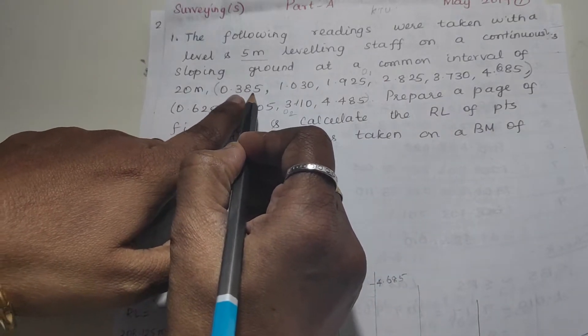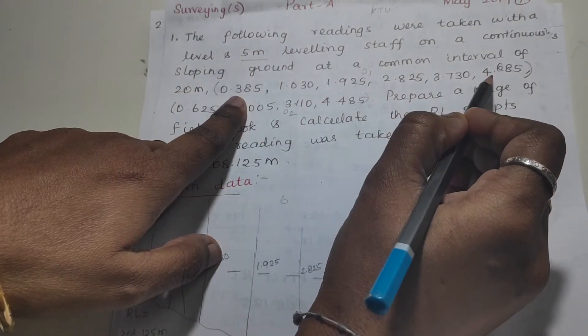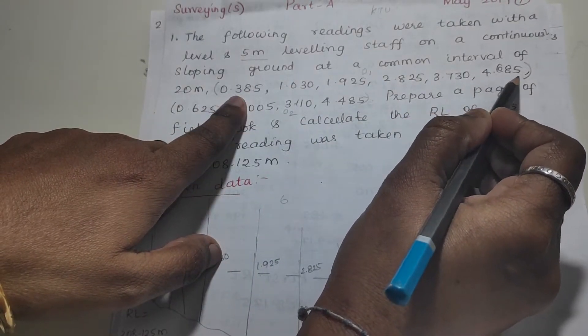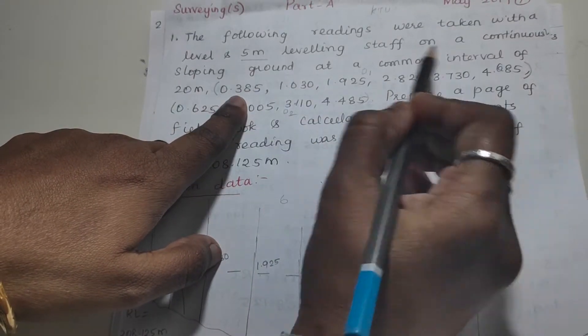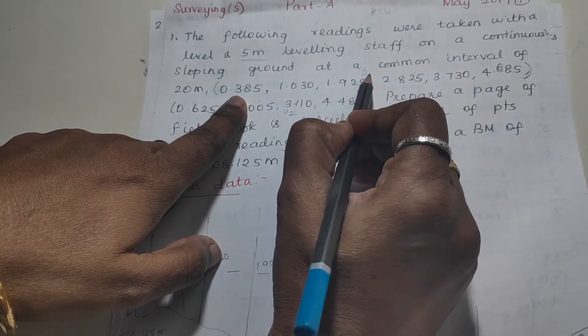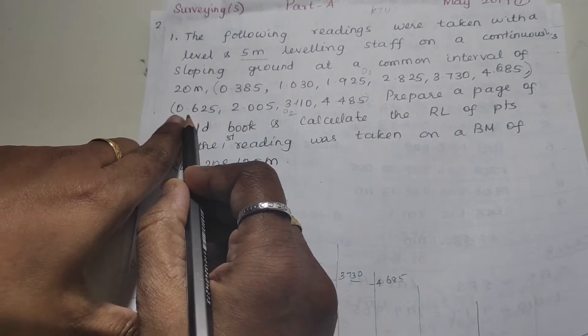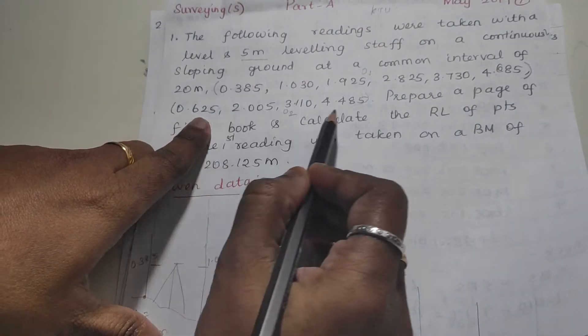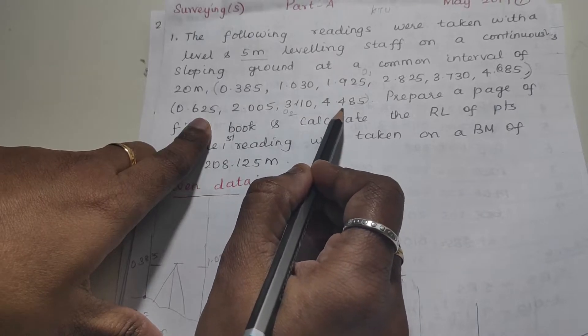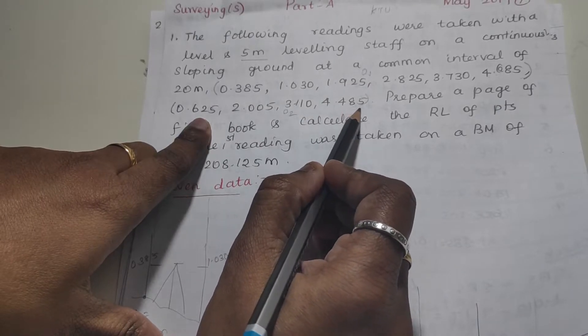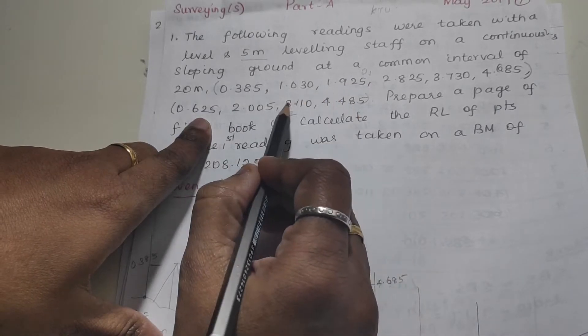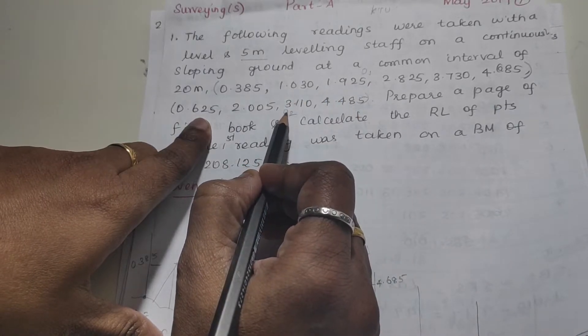The readings are 0.385 to 4.685 at station point 1. The readings 0.625 to 4.485 are at the next station.